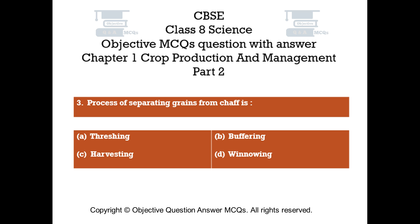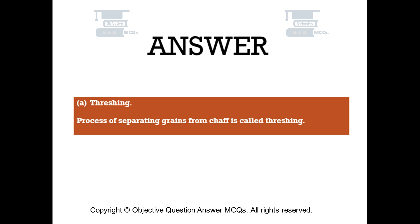Question number 3. Process of separating grains from chaff is. Option A: Threshing. Option B: Buffering. Option C: Harvesting. Option D: Winnowing. The right answer is Option A, Threshing. Process of separating grains from chaff is called threshing.